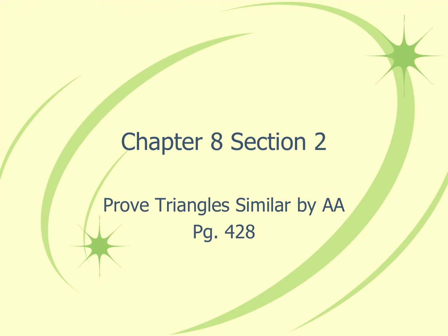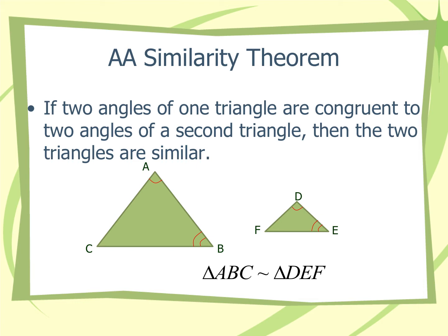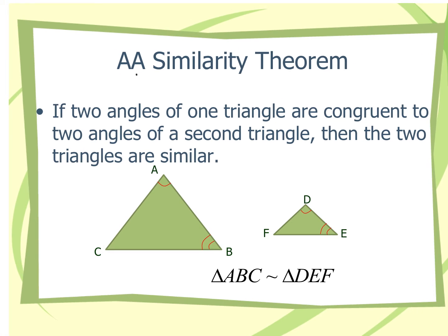Today we're going to cover our first shortcut for proving triangles similar. We learned shortcuts when we proved triangles congruent — if you recall, there were five of them: SSS, SAS, ASA, AAS, and hypotenuse-leg. There are only three shortcuts for proving triangles similar. The first one is AA, which stands for angle-angle. This angle-angle similarity theorem only works for triangles — you can't use it on any other type of polygon.